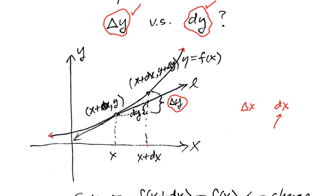Now, delta y — you can see visually — is the change in the y direction. Since this is supposed to be a differentiable function, over here at the original point x, y, there should be a tangent line, which I'm calling l. This is the tangent line to the curve at the original point. When we went from x to x plus dx, there's going to be a change in the actual function value, delta y. But there's usually also going to be a change in the value of the tangent line function — that's dy. That's what we mean by dy. dy is the change in the tangent line approximation function, and delta y is the actual change in the function. We call dy a differential change.